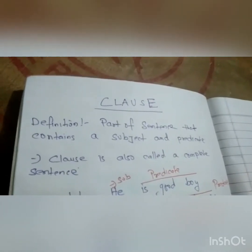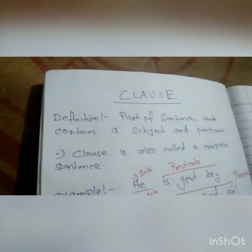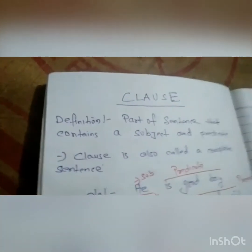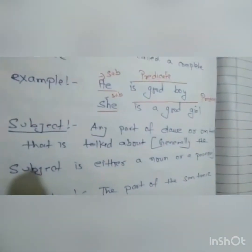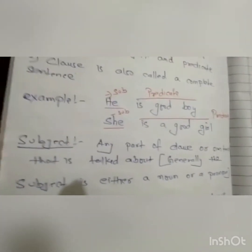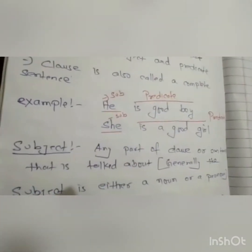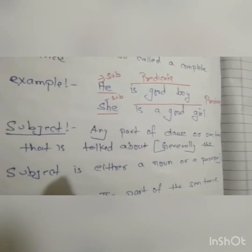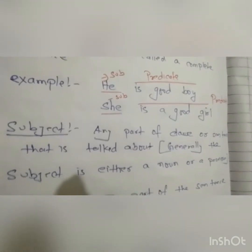From the definition, it is quite clear that a clause is a part of a sentence that contains a subject and a predicate. When I say subject and predicate, what is the meaning of these two words? Subject is any part of a clause or a sentence that is talked about. Subject is always the main part of a clause or a sentence. Subject is either a noun or a pronoun — we should always keep in mind that subject will either be a noun or a pronoun.